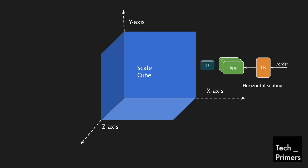This is generally called horizontal scaling. We can also define it as 'scale by cloning' — basically we are cloning an exact replica of the application and scaling it so it can handle more traffic. There could be different challenges, and we will look at the pros and cons of each axis shortly. But for now, the x-axis represents horizontal scaling, otherwise called scale by cloning — one way of scaling an application.